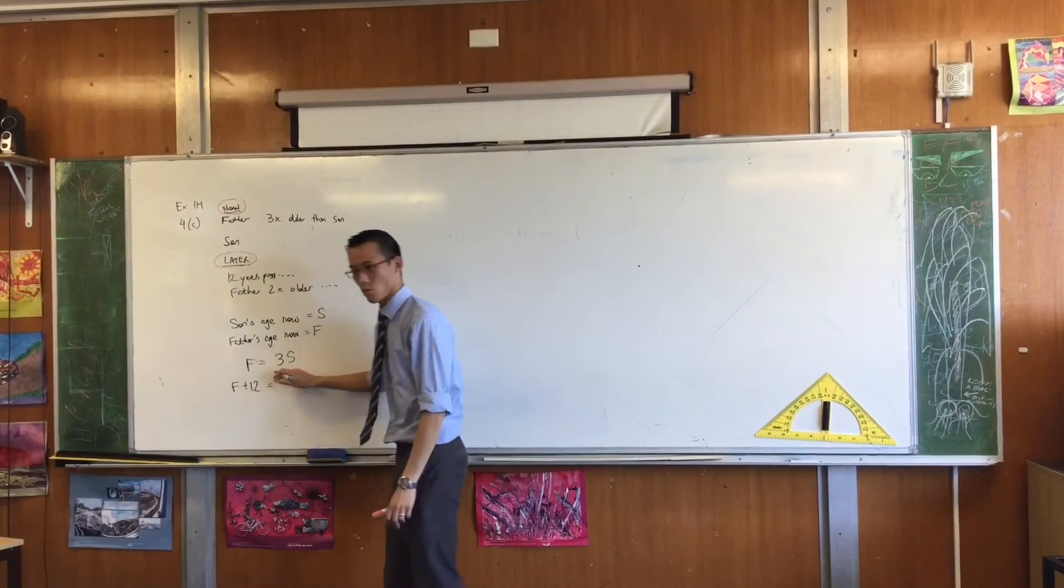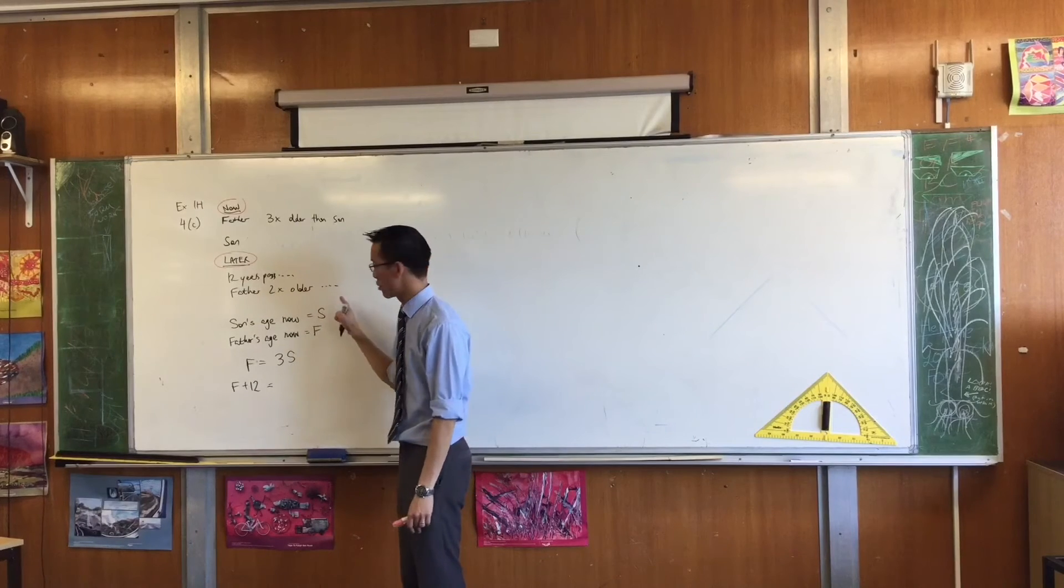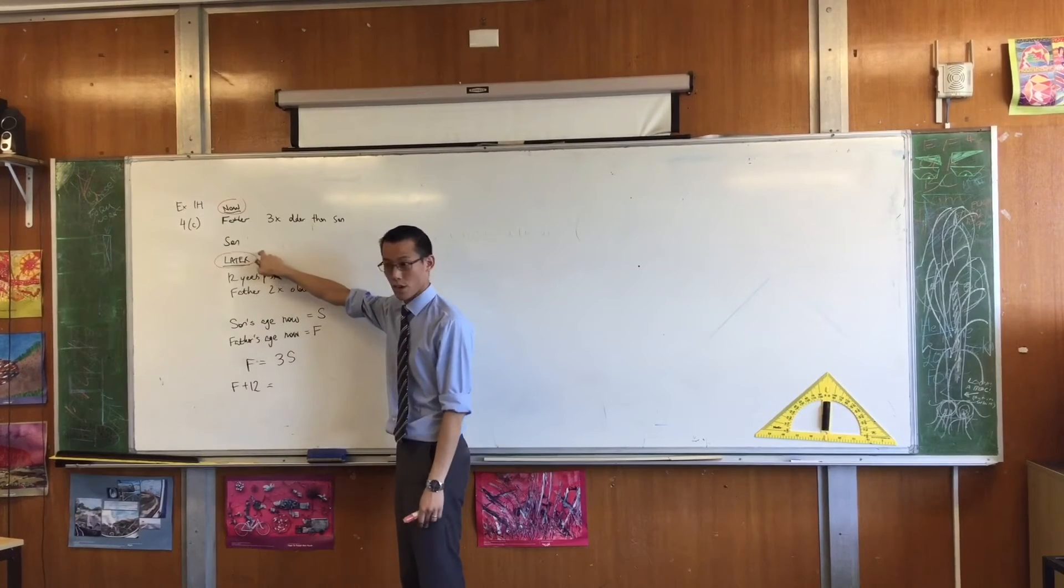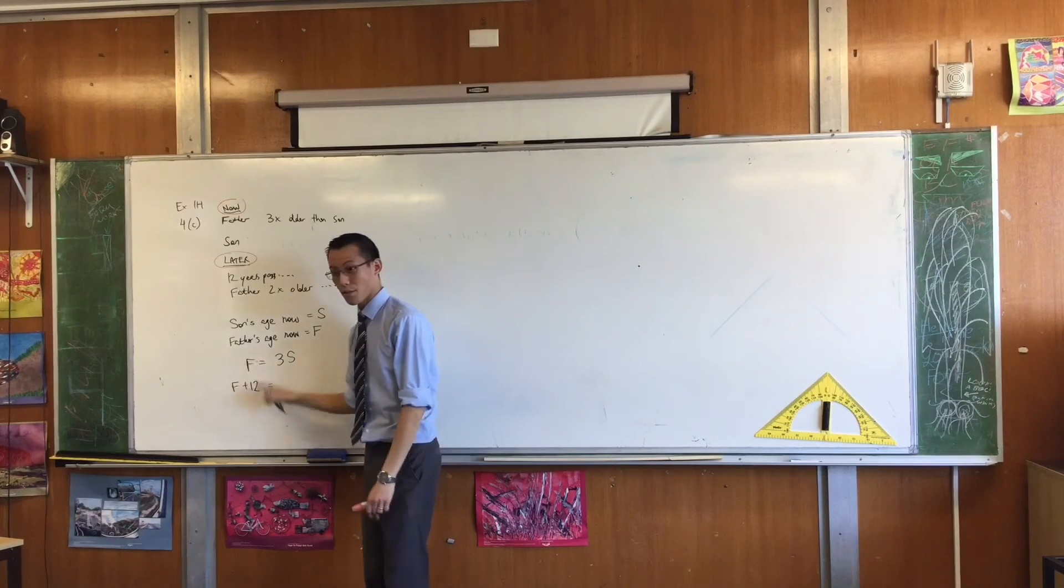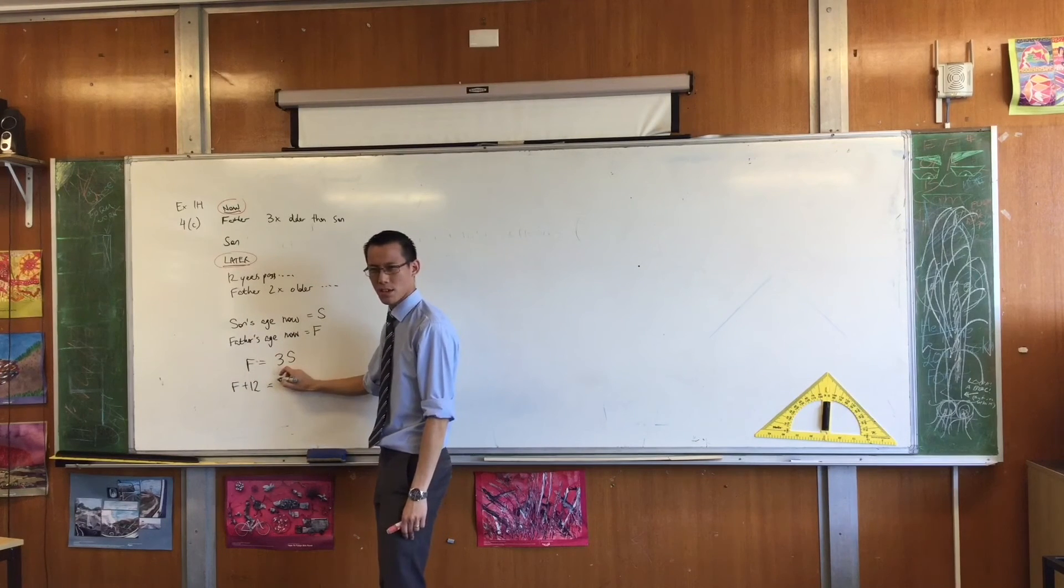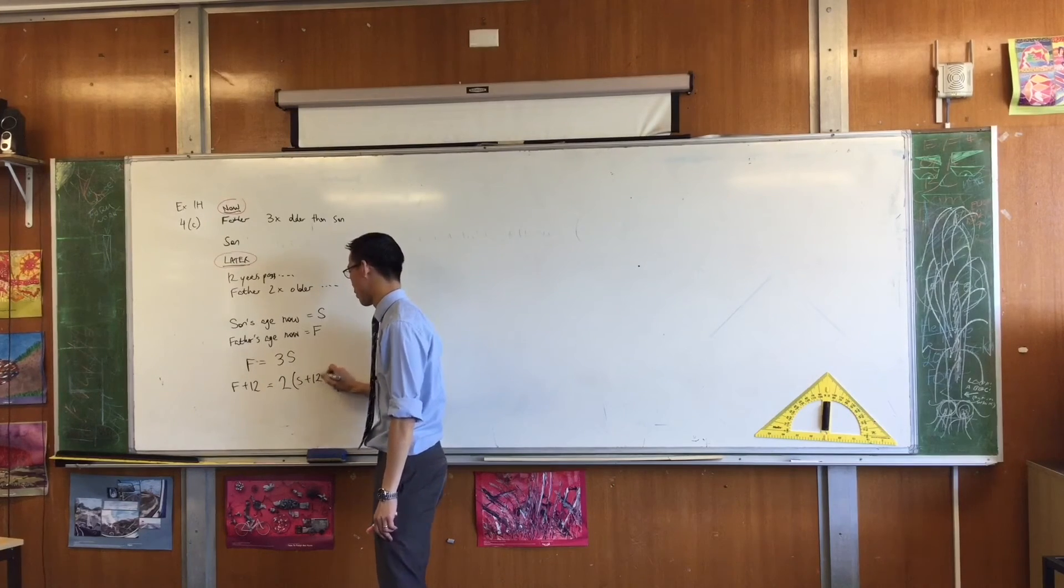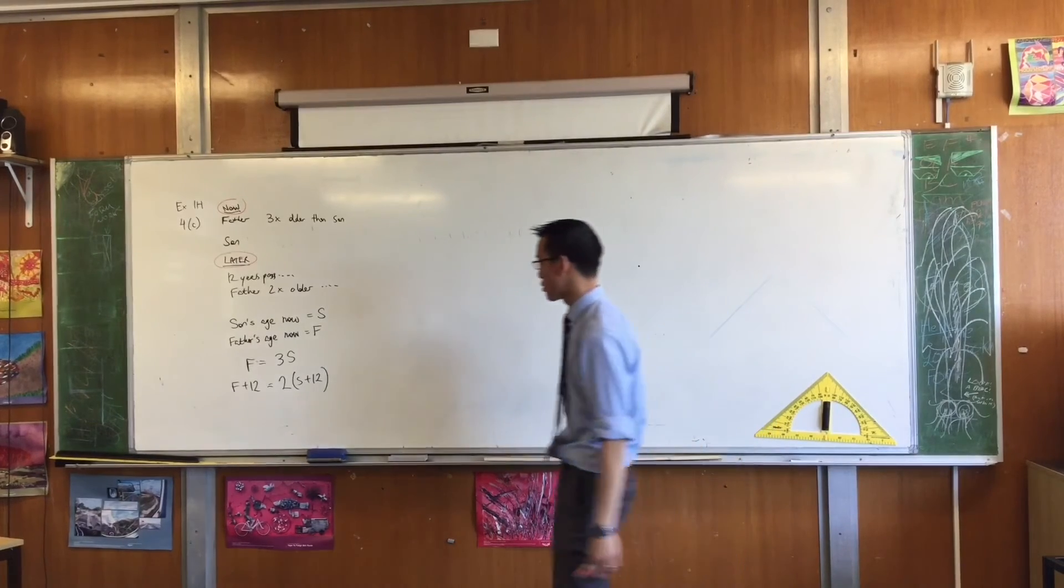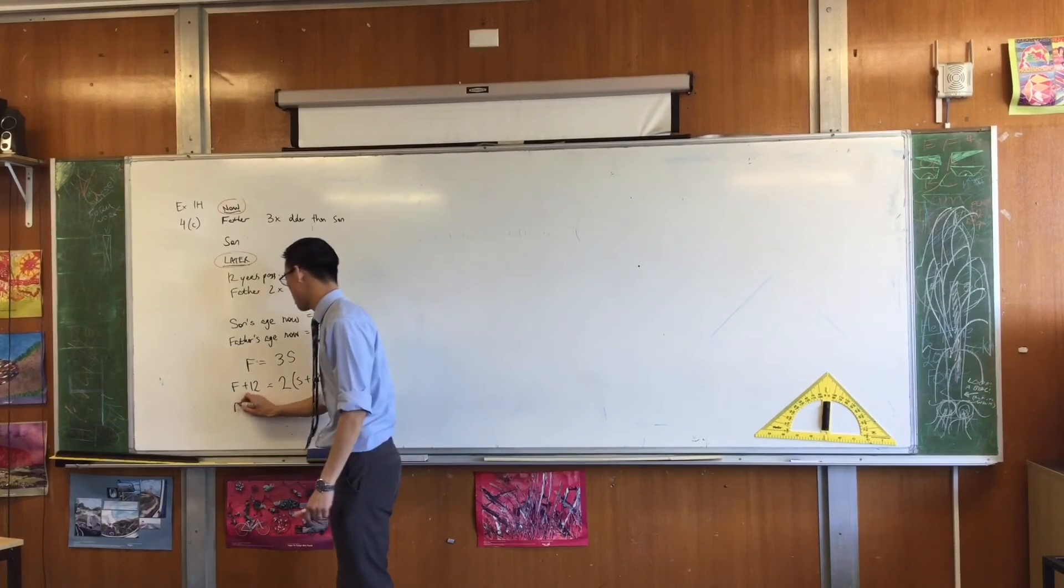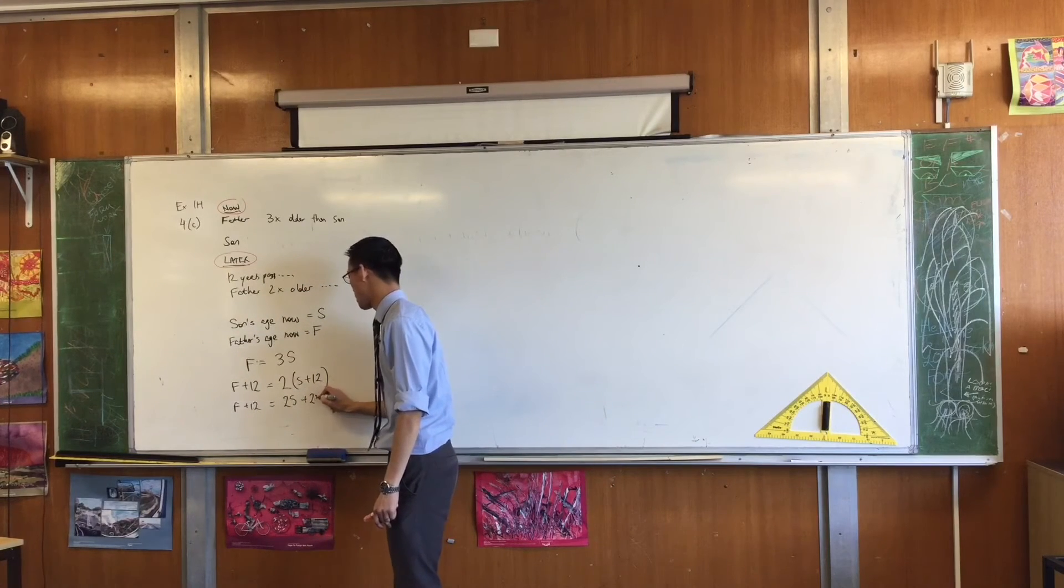So when I'm about to write this right hand side, which also connects the father's age to the son's age, it's the son's age in the future, just like it's the father's age in the future. The father in the future will be how much older than the son? Four. Double that age. And that age has also increased by 12. Are you okay with that? Okay? I've got two equations. I will tidy this up just a tiny bit. That's 2s plus 24.